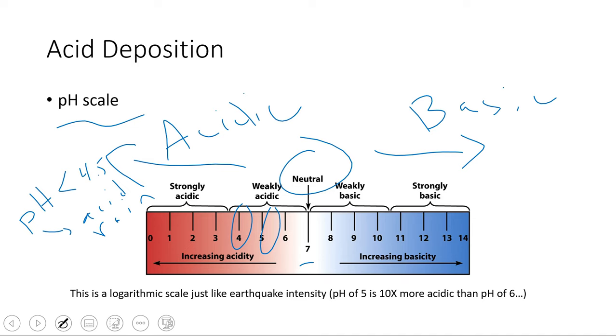It's worth also noting that this is a logarithmic scale just like our earthquake intensity. For every one point change on our pH scale, we adjust our acidity by a factor of 10. So a pH of 5, for example, is 10 times more acidic than the pH of 6. If we had a pH of 4, it would be 100 times more acidic than a pH of 6. A pH of 3 would be 1,000 times more acidic than a pH of 6. What makes something acidic is really just the presence of hydrogen ions. The more hydrogen ions we have present in our solution, the more acidic it is.